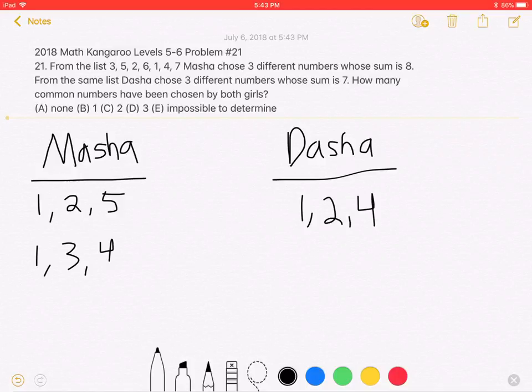So, now let's look at the question again. It's asking how many common numbers have been chosen. So, Masa has two options of numbers she could have chosen. Regardless, however, they will still have two numbers in common.